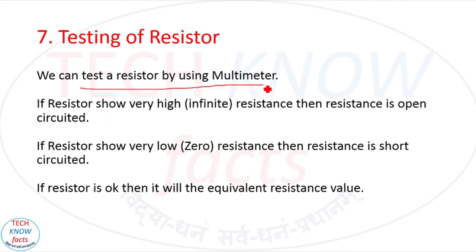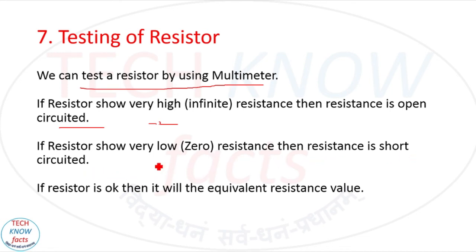Testing of a resistor: we can test a resistor using a multimeter. If the resistor shows very high or infinite resistance, the resistor is open-circuited — meaning there is air between the terminals, which has infinite resistance. If the resistor shows very low resistance near zero, the resistor is short-circuited, meaning the material is fully conductive. If the resistor is okay, the multimeter will show the equivalent resistance value.